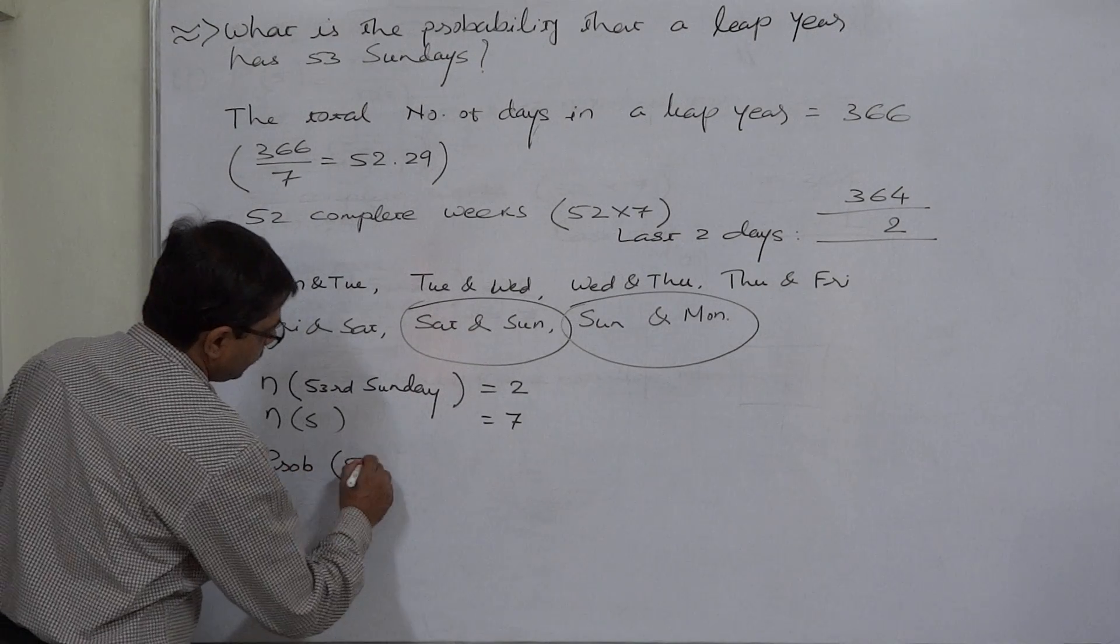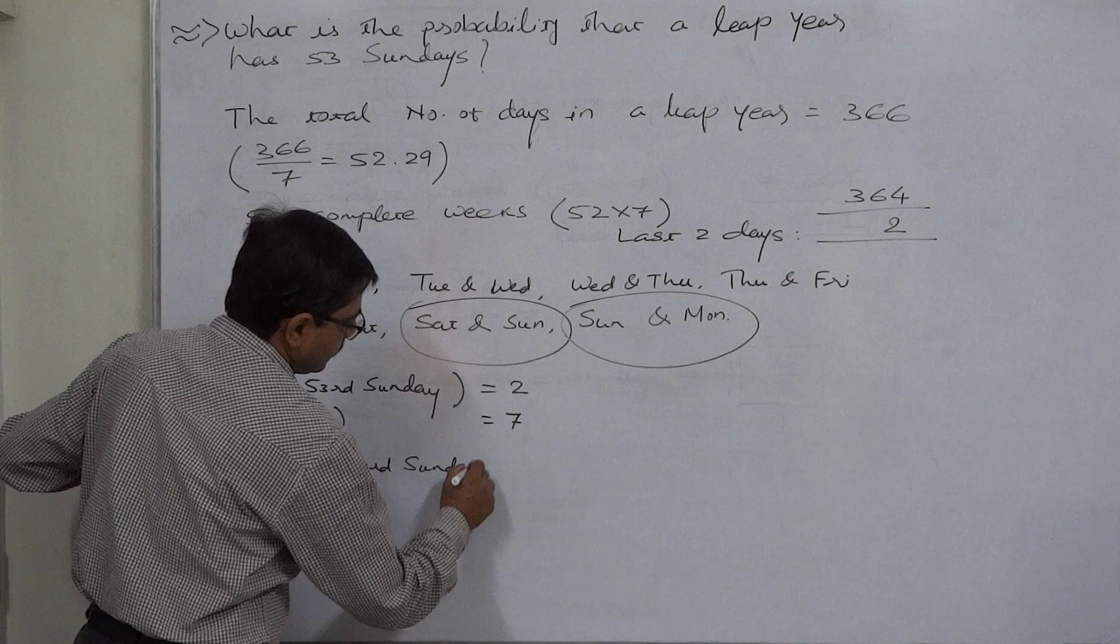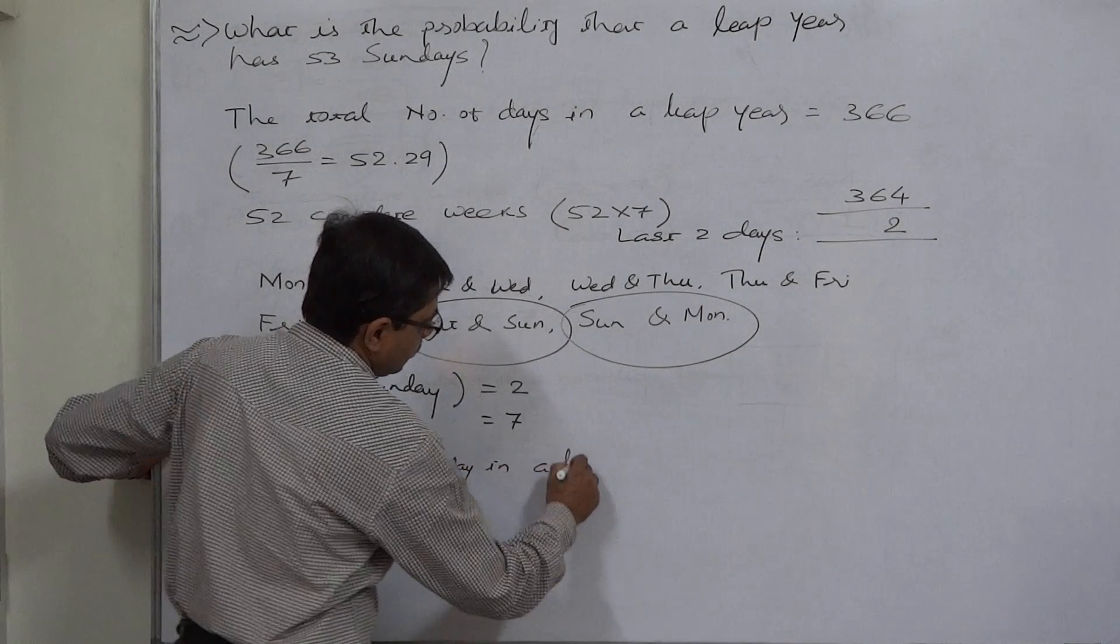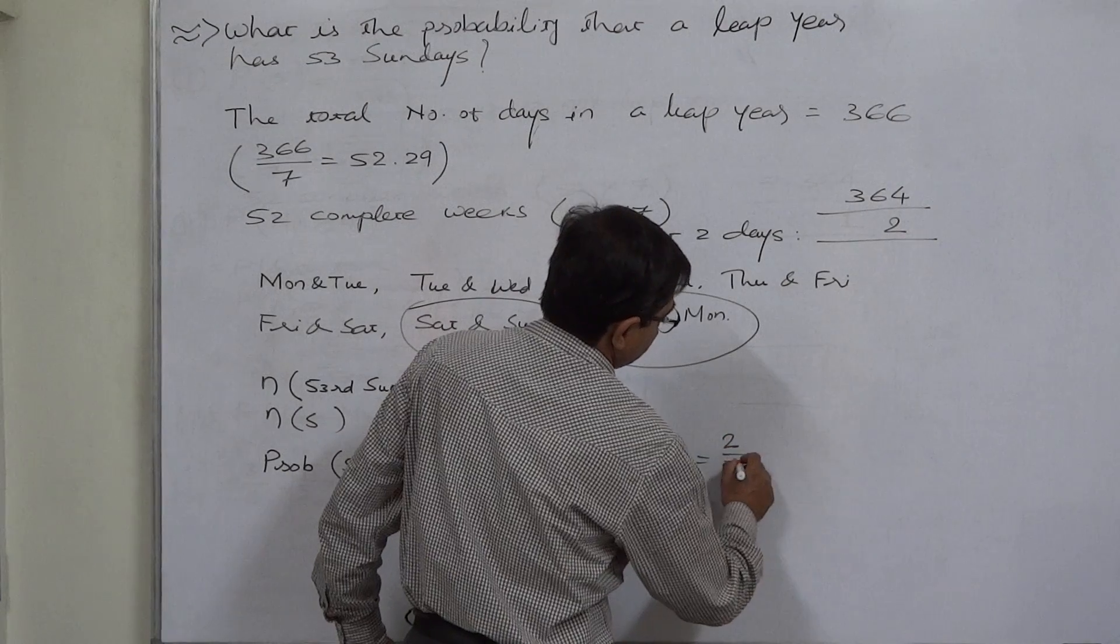So ultimately the probability of 53 Sundays in a leap year comes to 2 by 7.